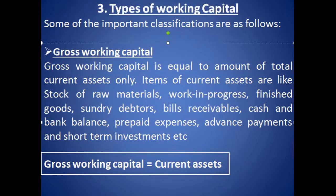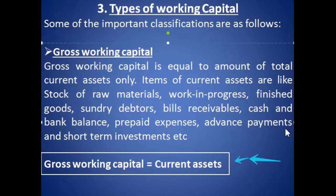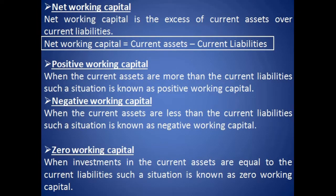Now we will discuss types of working capital. The first type is gross working capital — it is nothing but total current assets. Total current assets include stock of raw material, WIP, finished goods, sundry debtors, bills receivable, cash and bank balance, prepaid expenses, etc. When we say gross working capital, we don't deduct current liabilities from current assets — it's only current assets.